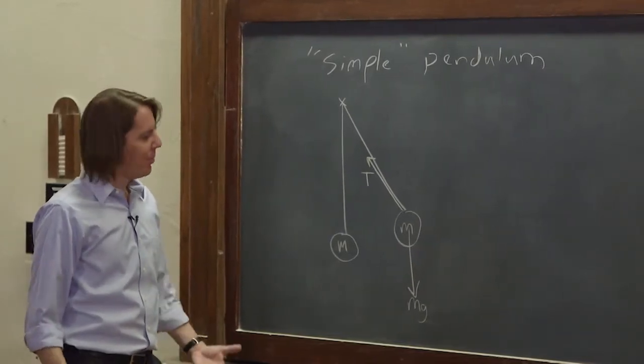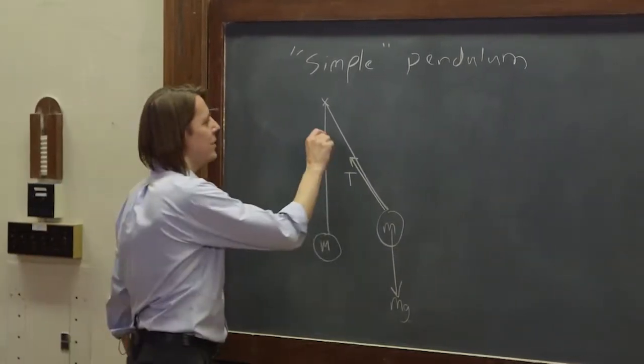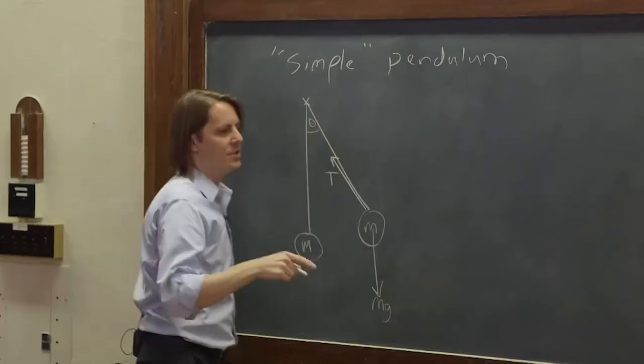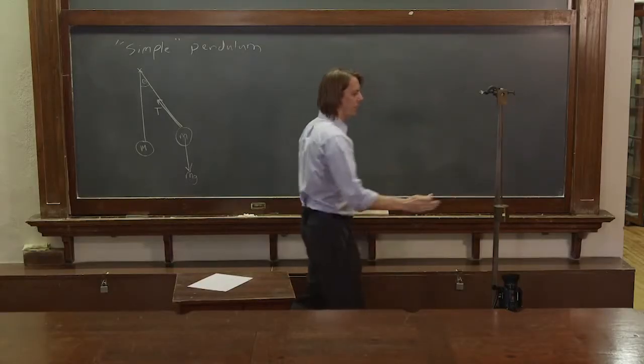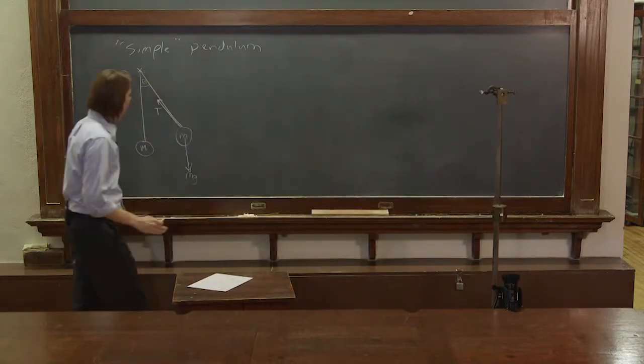So different books go about it different ways. As I've said, usually you think in terms of this angle, because that's what's changing as the thing goes back and forth. You think of straight down as zero, and you're altering the angle as it moves.